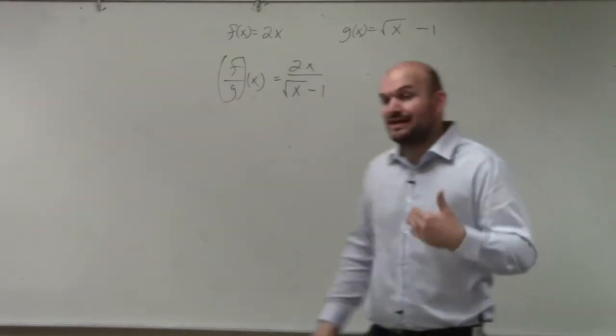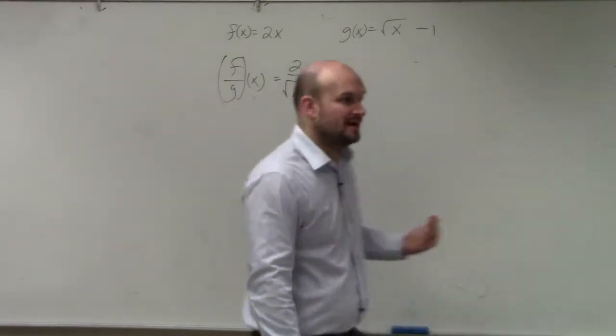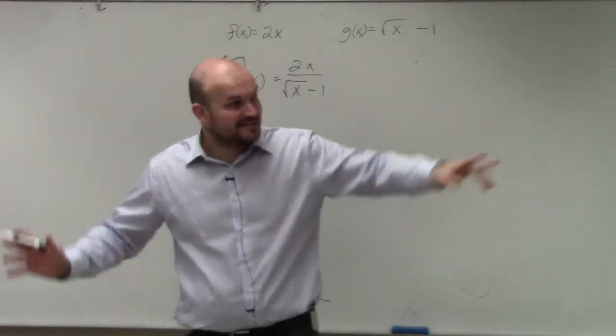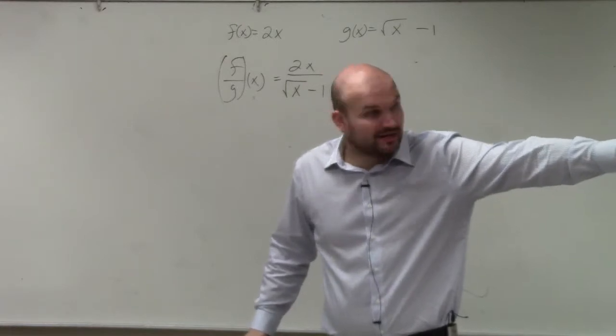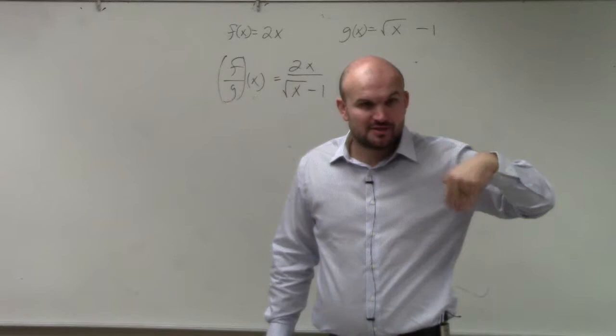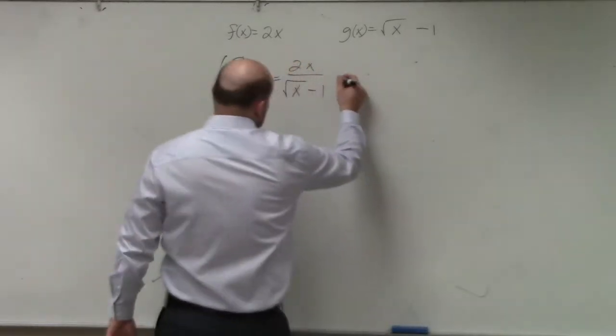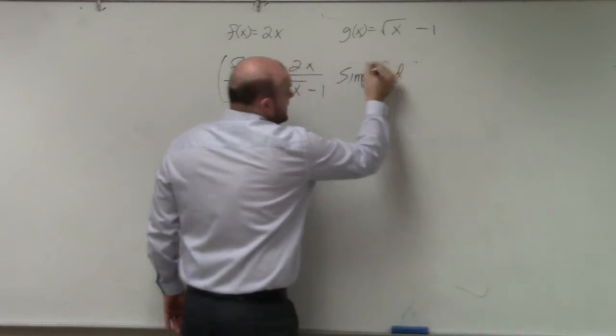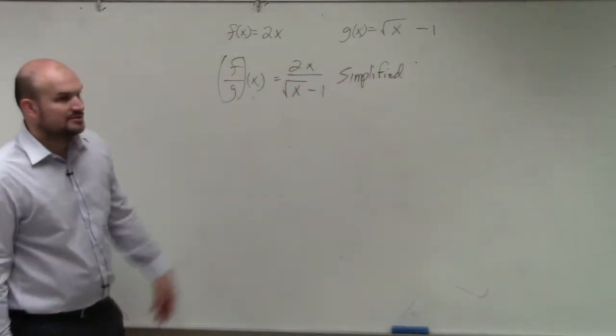The only thing now we need to look at is our domain. Now there's actually two restrictions. The only restrictions we have talked about in this class: when you have a variable in the denominator and when you have a variable under the radical symbol. So to find our domain, since we can't simplify, this is simplified. We can't do anything else with it. So that was easy.